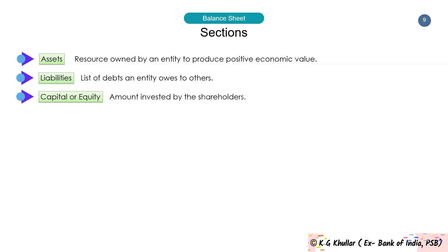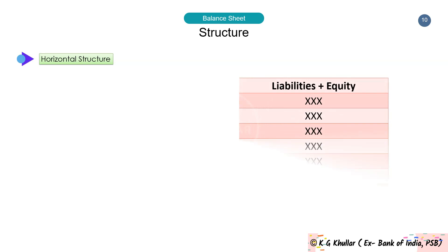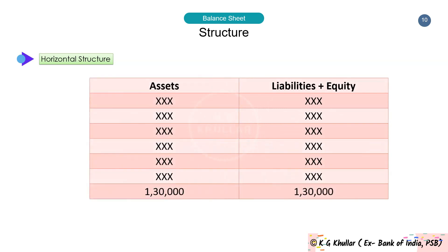There are many structures of balance sheet, but two of the most used are the horizontal and vertical formats. In the horizontal format, equity and liabilities are shown on one side and assets on the other side, and these two columns match — that is, assets equal liability plus capital.